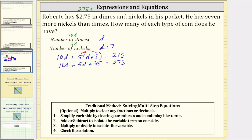We have like terms on the left side. 10d plus 5d is 15d. The left side simplifies to 15d plus 35 equals 275. The next step is to add or subtract to isolate the variable term.